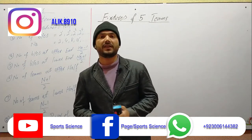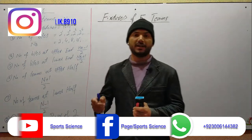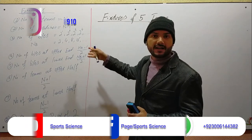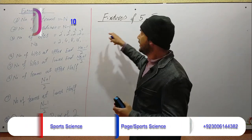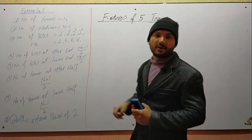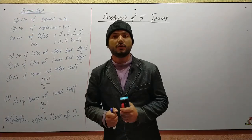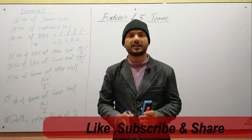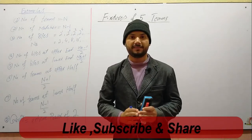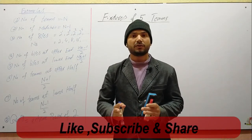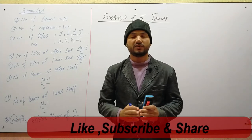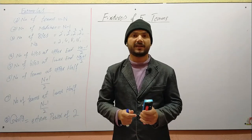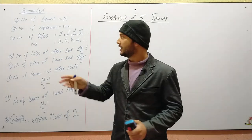Today's topic is basically we have to draw fixtures for 5 teams. For example, we are conducting a tournament. In that tournament, 5 teams have participated. So there is a knockout system. We will draw the fixtures and explain it to you.